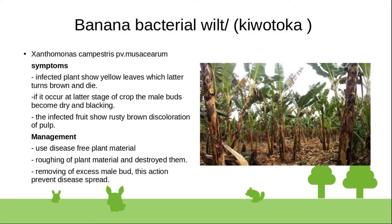Management of bacterial wilt includes use of disease-free planting material, roguing and destruction of infected plant material, and removing excess male buds to prevent disease spread.